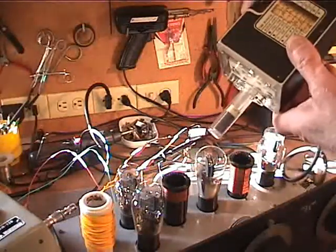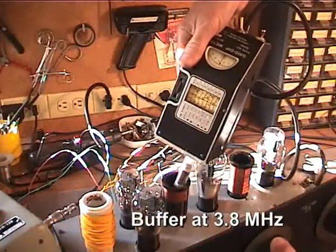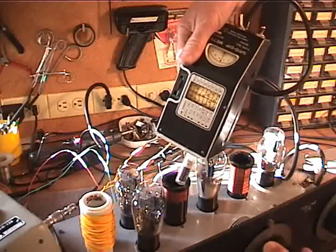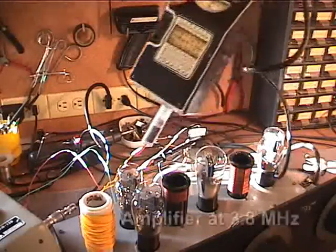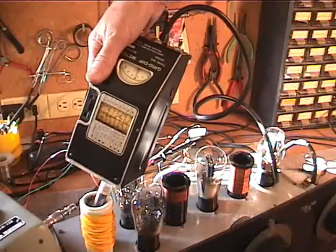And move over to the buffer, retune the grid dipper to 3.8 MHz. And we see a dip there at 3.8 MHz. And then we go over to the final amplifier and see that that also dips at 3.8 MHz.